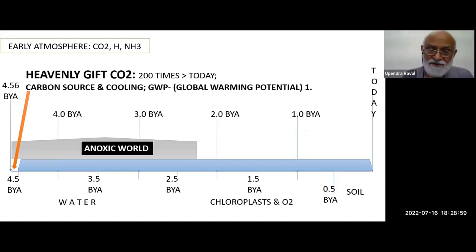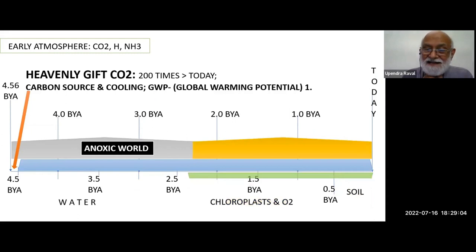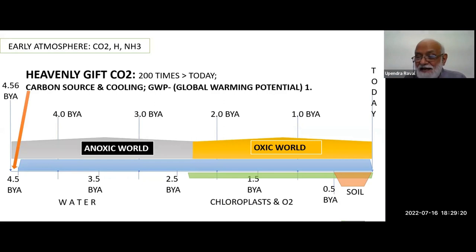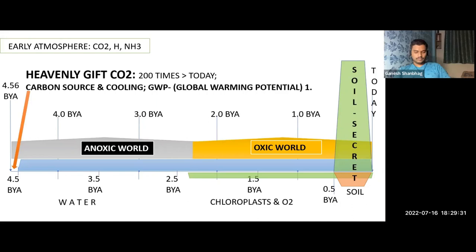The first half of the planet was anoxic. Water was there for 4.5 billion years since the beginning. The second half brought atmospheric oxygen. Only during the last one-ninth phase of 500 million years did we get the soil, and that shot up vegetation, greenery, chlorophyll-containing plants and all that.